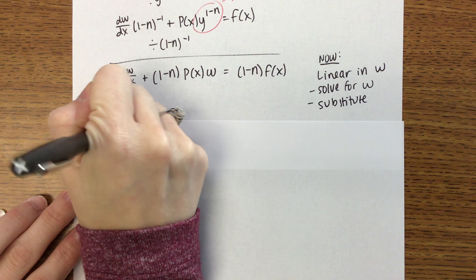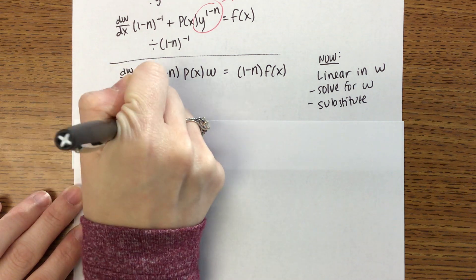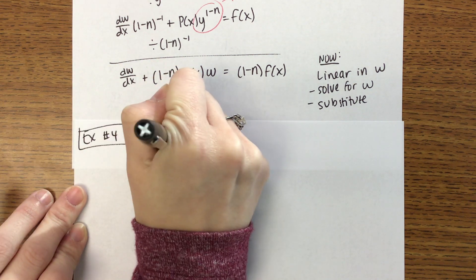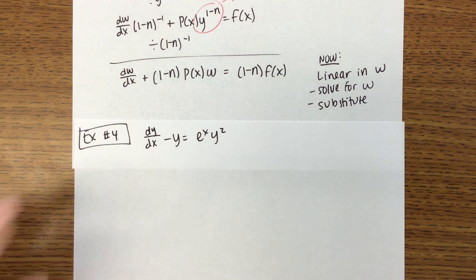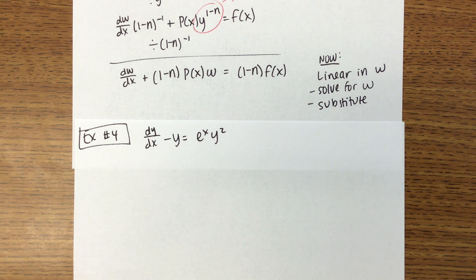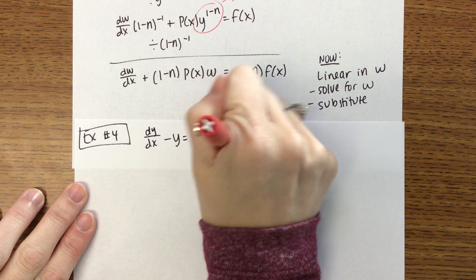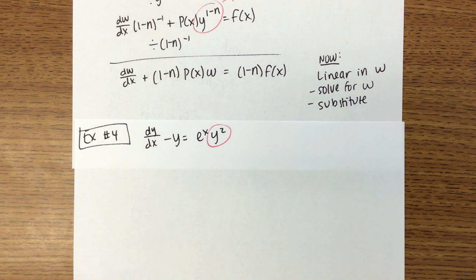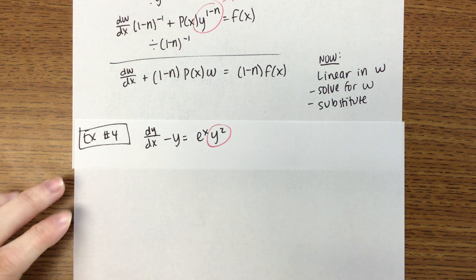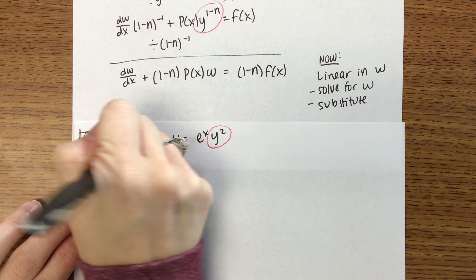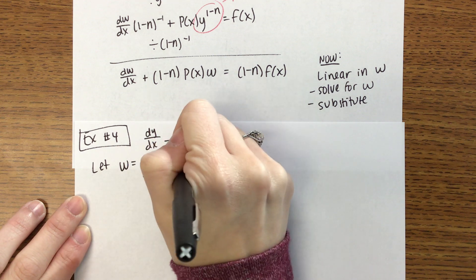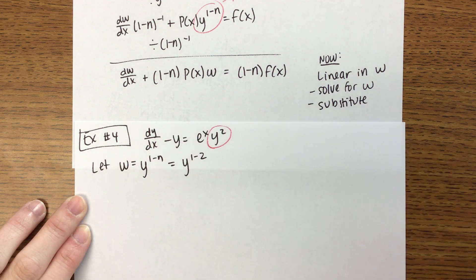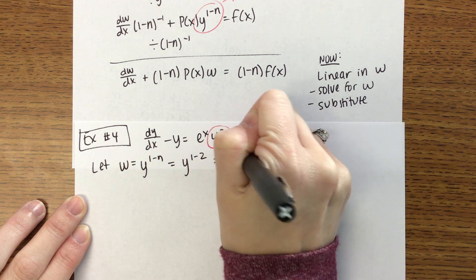Here's the one we're going to try: dy/dx minus y equals e to the x times y squared. This looks linear except that it has that y-squared term — that's what makes it Bernoulli. So we are going to let w equal y to the (1 minus n), which in this case is y to the (1 minus 2), so y to the negative one.